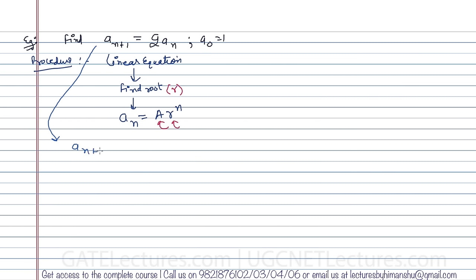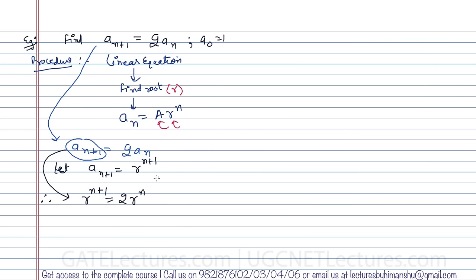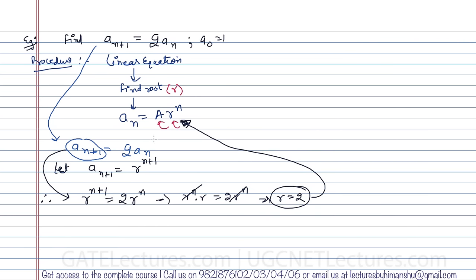Starting with a(n+1) = 2·a(n), to find the root we substitute a(n+1) = r^(n+1) and a(n) = r^n. The equation becomes r^(n+1) = 2·r^n. Rewriting the left side: r^n · r = 2·r^n. Dividing both sides by r^n, we get r = 2.